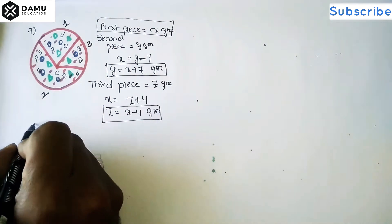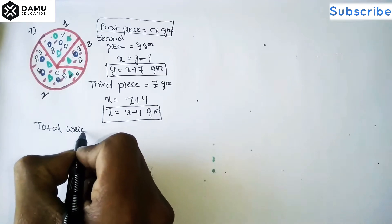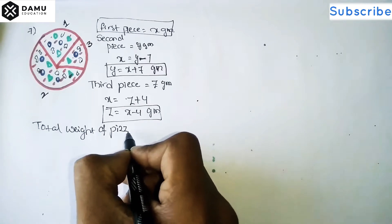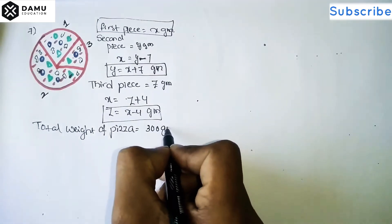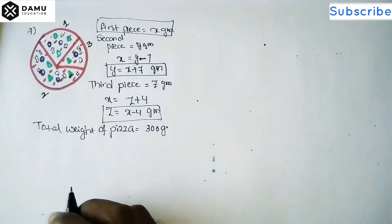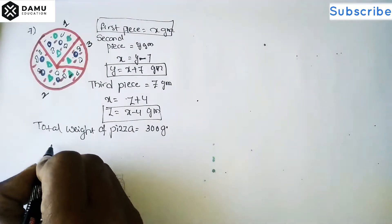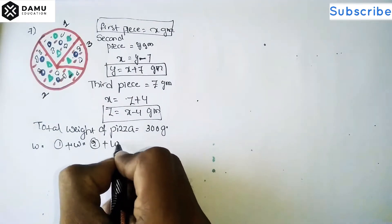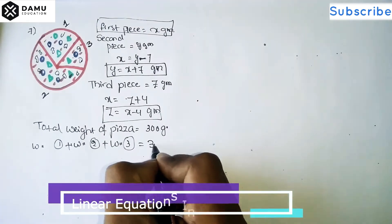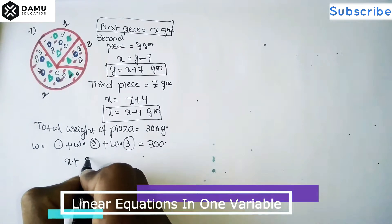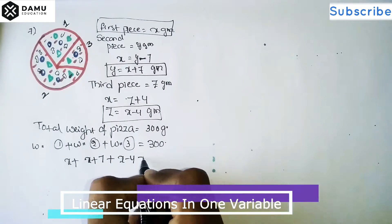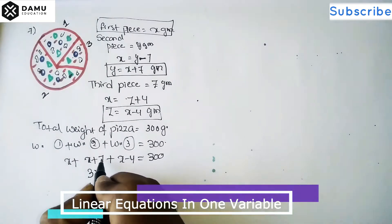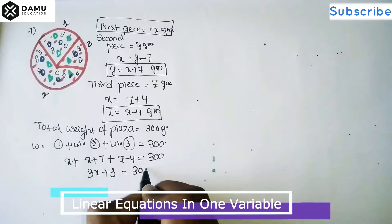Now, total weight of the pizza is 300 grams. So we add all the pieces: weight of first piece plus weight of second piece plus weight of third piece equals 300 grams. That gives us x plus (x plus 7) plus (x minus 4) equals 300. Then 3x plus 3 equals 300.